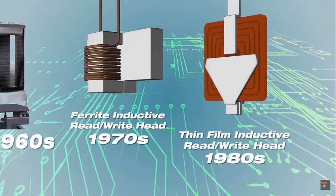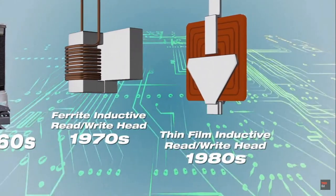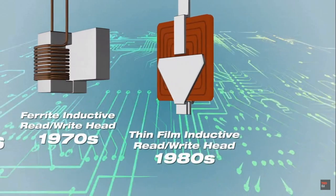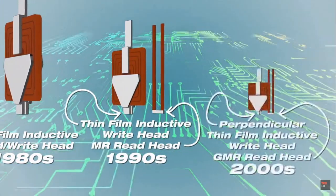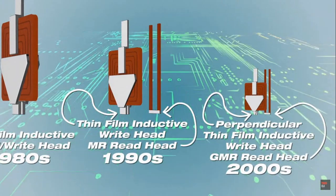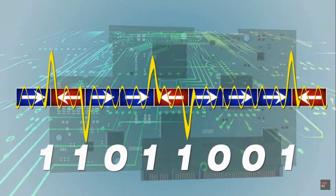A technique called the thin film lithography process allowed engineers to shrink the reader and writer. And despite its size, the reader became more sensitive by taking advantage of new discoveries in magnetic and quantum properties of matter.